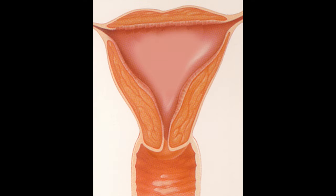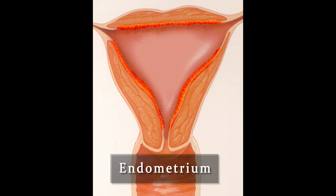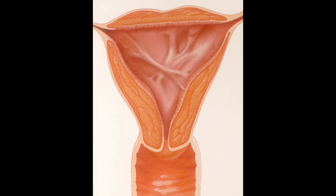The inside of the uterine cavity is lined with a layer of special cells called the endometrium. In certain situations, these cells can be damaged or destroyed, causing scar tissue to be left behind.